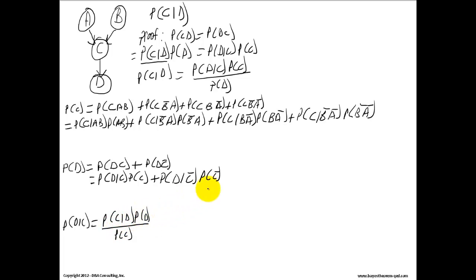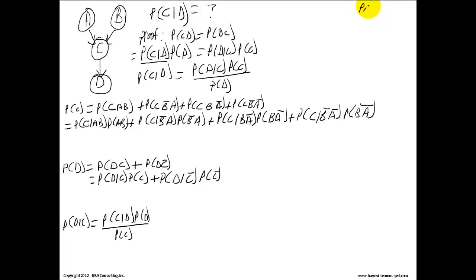So now we've determined how to solve the probability of C given D. The probability of C given D equals probability of D given C times the probability of C divided by the probability of D. This is part one and I'll come back with part two. Thank you.